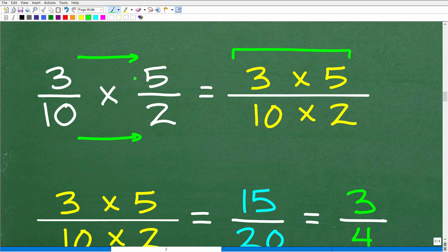Again, the numerators are the top numbers of the fraction. So we're just multiplying across. So 3 over 10 times 5 over 2 is 3 times 5. We'll figure this out. And then 10 times 2 will be our denominator.